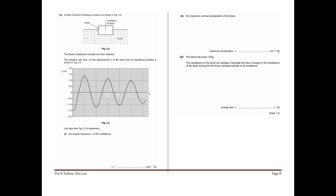Use the data from figure 3.3 to determine the angular frequency omega of the oscillation. From the graph we can read the period — it is 0.8 seconds. So omega equals 2π over T, which gives 2π over 0.8, equal to 7.85 radians per second.